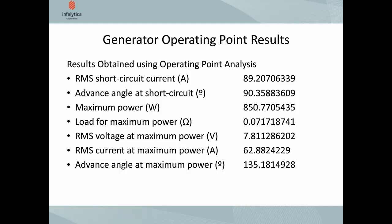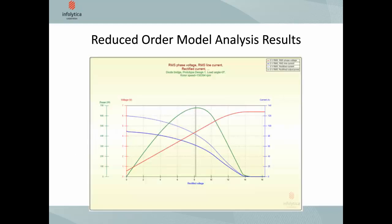Here's an example of reduced order model analysis using a diode bridge output. I've arranged the rectified voltage at the outputs of the diode bridge and looked at the phase current, phase voltage, output power, and current. Using the cursor to view specific values is very interesting — it tells us what would happen if we put in a certain battery and where it would sit on this curve, without actually having to select and test on a given battery set.